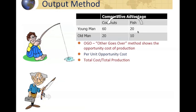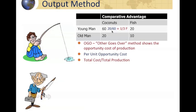We're going to take numbers from one column and put them over the numbers from the other column. If producing 60 coconuts costs 20 fish, I put that cost over the total production. So we take 20 over 60, which breaks down to one-third. This means that every time the young man collects one coconut, it costs him one-third of a fish — it equals his ability to produce one-third of a fish.